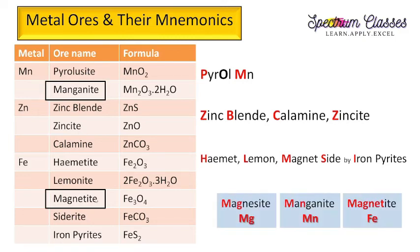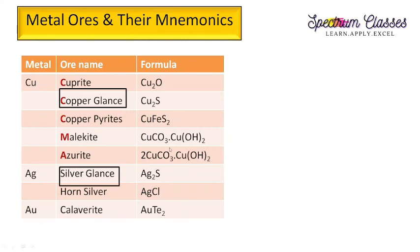One important distinction: we have three similarly named ores — magnesite (ore of magnesium), manganite (ore of manganese), and magnetite (ore of iron). Keep these three separate. The next ores are copper, silver, and gold.